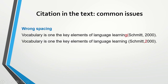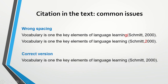Another issue is related to spacing. In the first example, there is no space between the word and the bracket — it is important to have a space there. In the second example, there is no space after the comma and before the year of publication — it is important to have a space there as well. So make sure you have a space before the bracket and after the comma and before the year of publication.